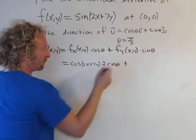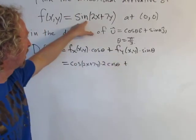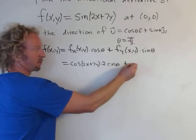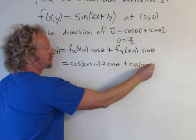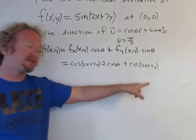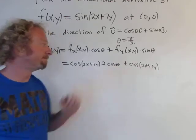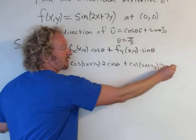Plus the partial with respect to y, so the derivative of sine is cosine, so cosine (2x + 7y). And this time the chain rule is going to give us a 7, because the derivative of the inside is 7. So 7 sine theta.